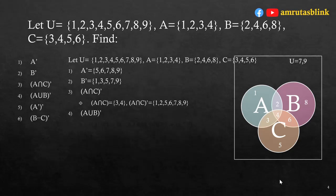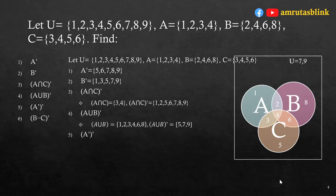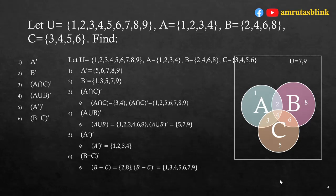To find (A∪B) complement: A∪B = {1,2,3,4,6,8}, so (A∪B) complement = {5,7,9}. A double complement is always equal to A, so it is {1,2,3,4}. For (B minus C) complement: B∩C elements common to both are 4 and 6, so B minus C = {2,8}, and (B minus C) complement = {1,3,4,5,6,7,9}.